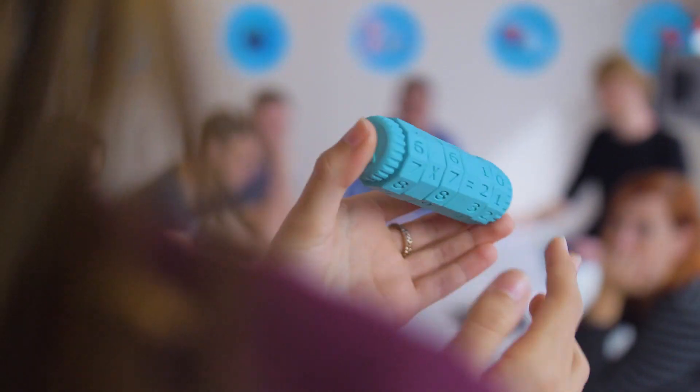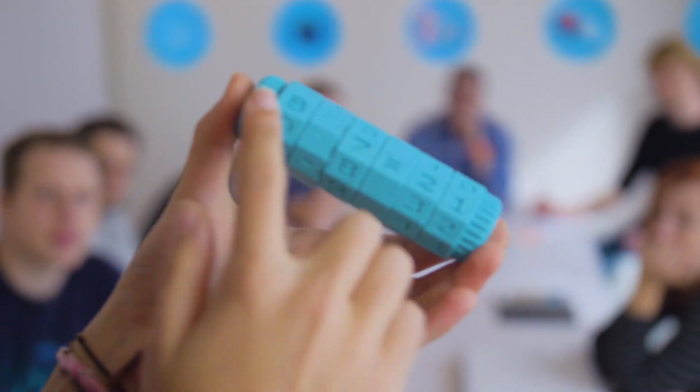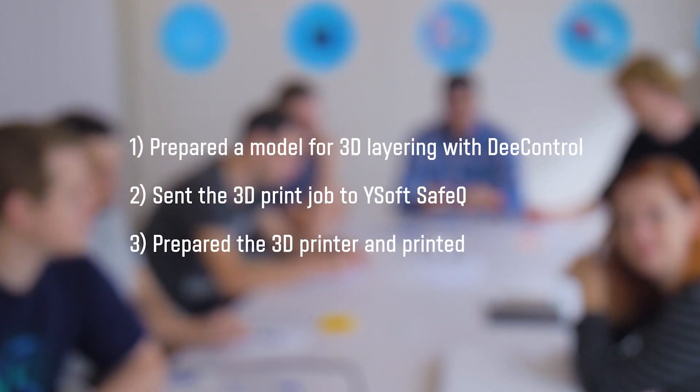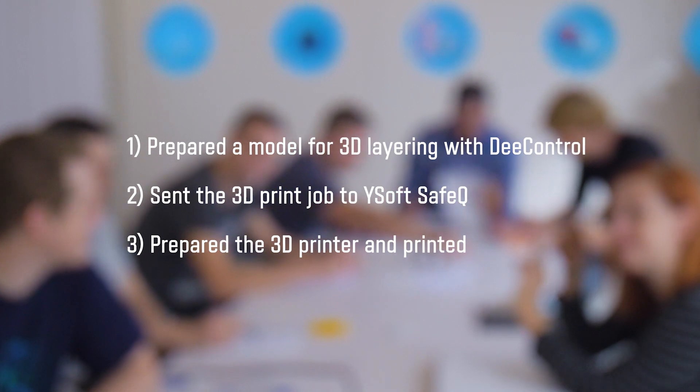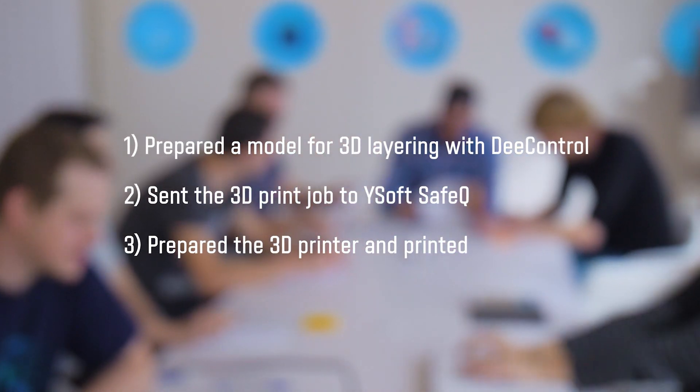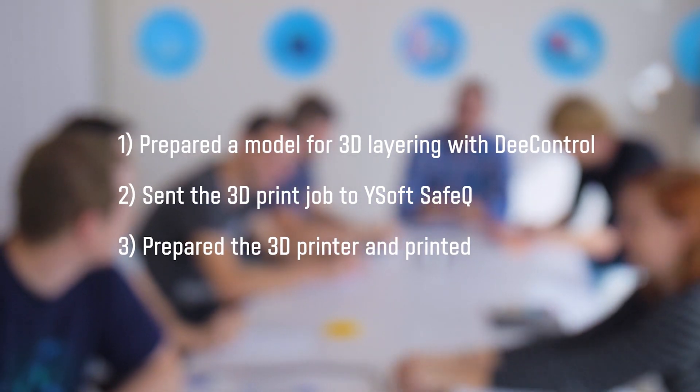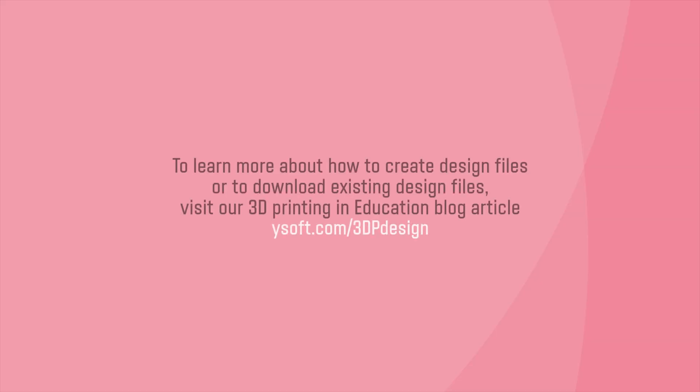With these easy three steps, we have a finished 3D model. We used D-Control to prepare our digital file. We sent the file to YSoft SafeQ until we were ready to print at an available printer. And finally, we prepared the printer and printed our model. That was pretty easy. Enjoy your 3D printing experience with YSoft B3D-ED. Thank you.